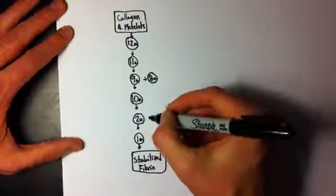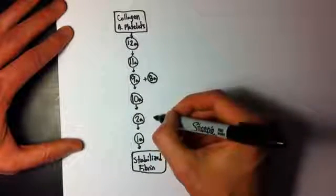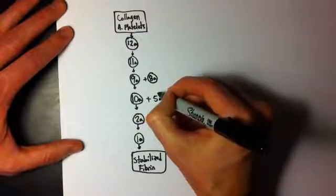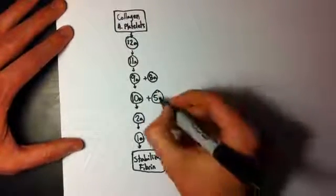10A, in order to convert prothrombin to thrombin, requires 5A, which of course comes from 5. It's not rocket science.